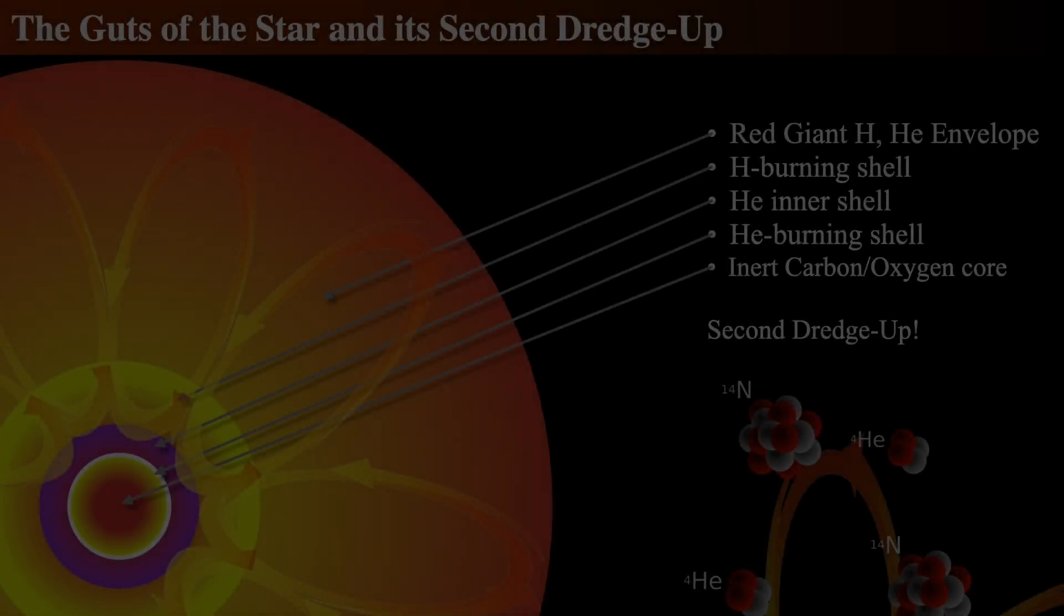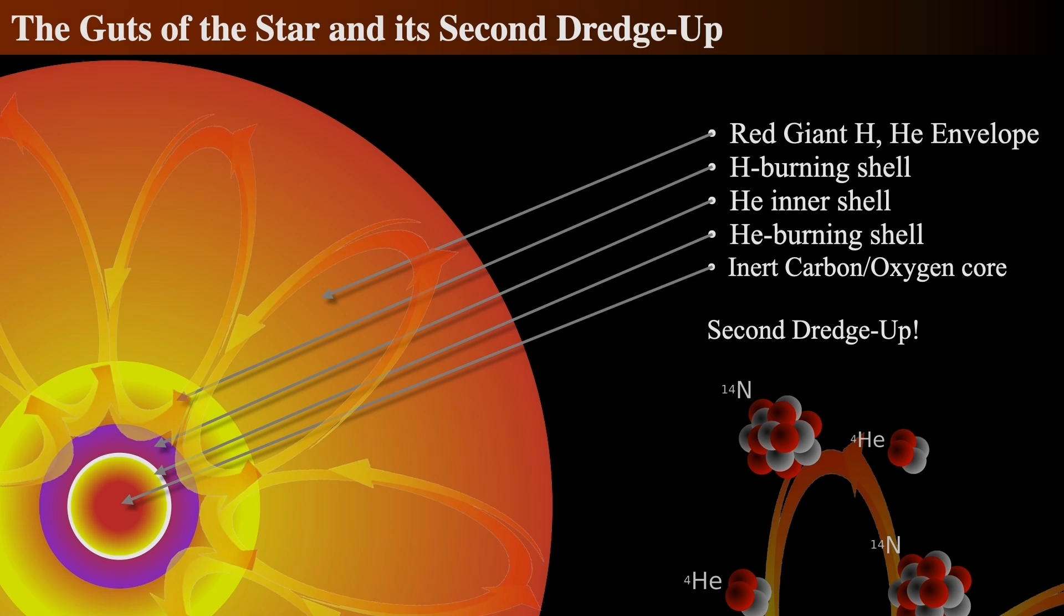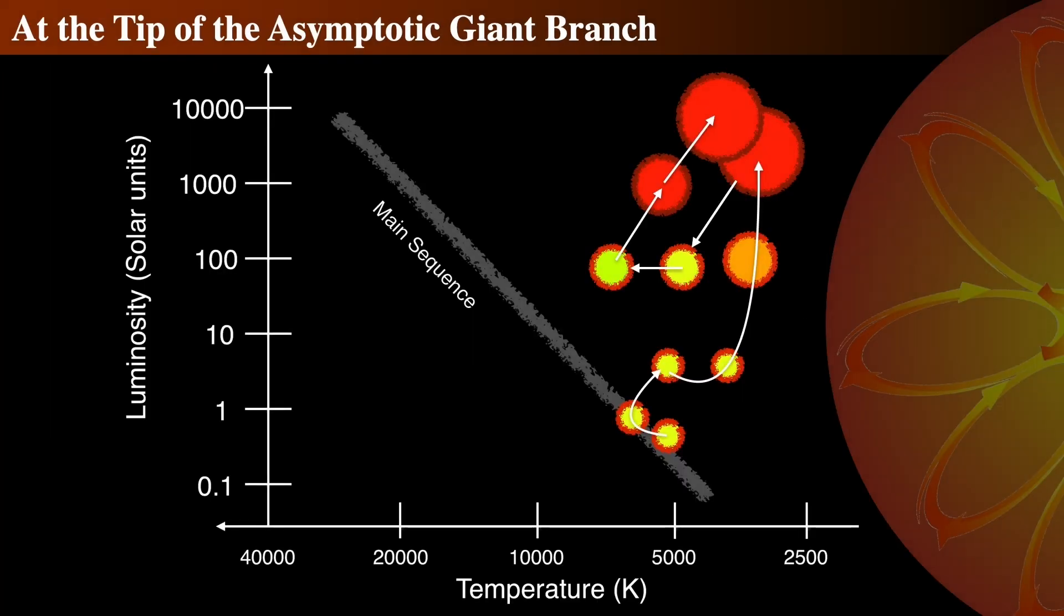This confirms the existence of the CNO cycle and again tests stellar evolution theories. Our Sun-like star is now rapidly climbing the Asymptotic Giant Branch, or the AGB.